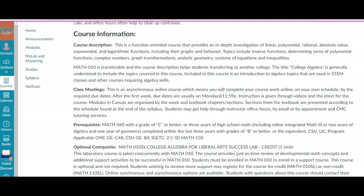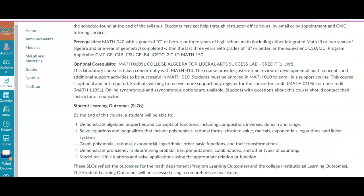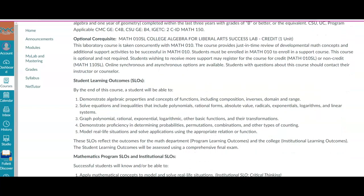This week is a lot of getting started information like the syllabus and some of those things. Okay, there is a co-requisite option for this course. It is called Math 10 SL, College Algebra for Liberal Arts. So I'm going to try to point to things.